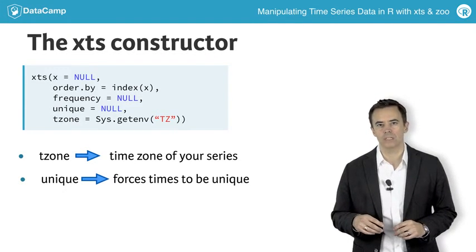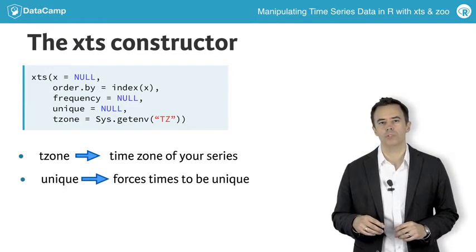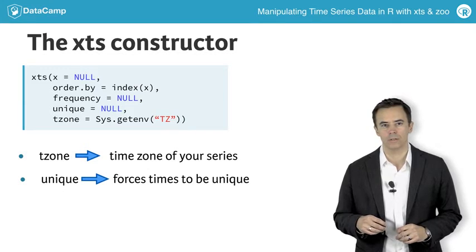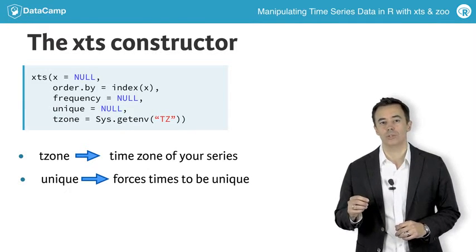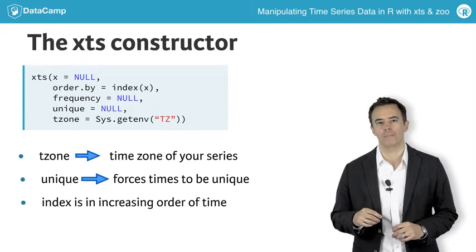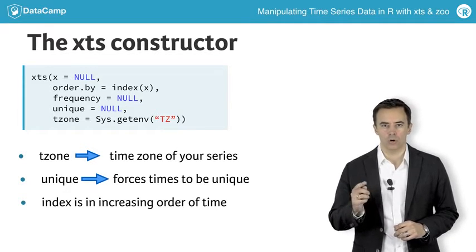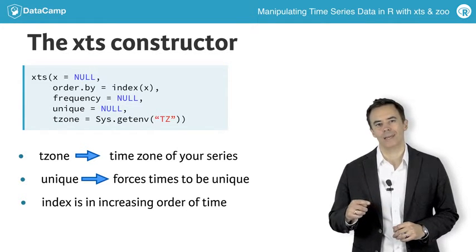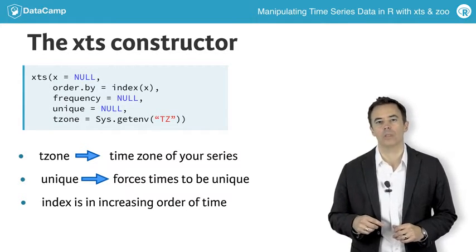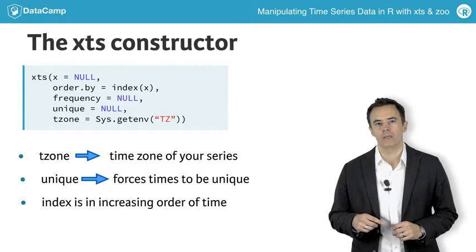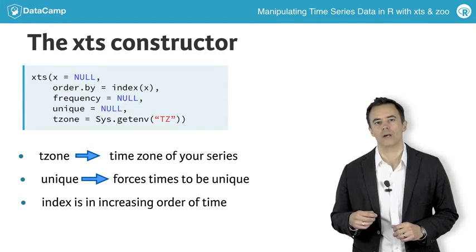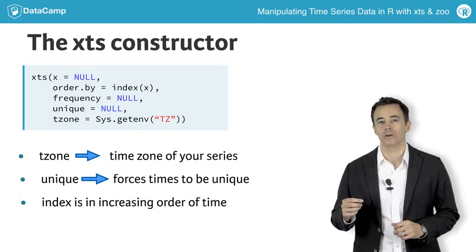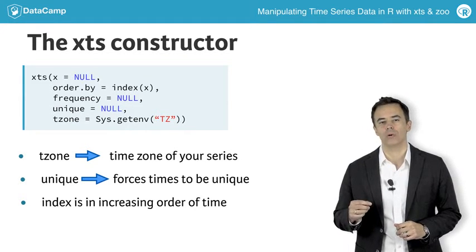Note that XTS doesn't enforce uniqueness for your index, but you may require this in your own applications. One thing to note is that your index should be in increasing order of time — earlier observations at the top of your object, and later more recent observations toward the bottom. If you pass in a non-sorted vector, XTS will reorder your index and the corresponding rows of your data to ensure a properly ordered time series.